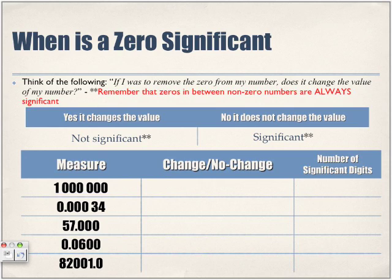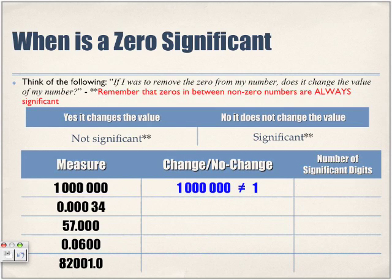For example, 1,000,000. If I remove the zeros, I get 1 — and 1,000,000 is not equal to 1. Did the value change? Yes, it did. Because removing the zeros changed the value, those zeros are not significant. So how many significant digits are in 1,000,000? One. For 0.00034, if I remove those leading zeros, 0.00034 is not equal to 34. Did the value change? Yes. So those zeros are not significant — we only have two significant digits.